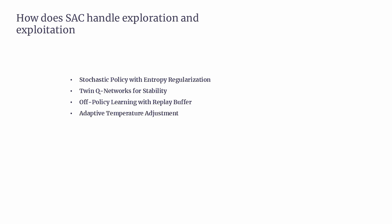The fourth mechanism is Adaptive Temperature Adjustment. The temperature parameter alpha is critical — it determines how much weight is given to the entropy term, directly controlling the trade-off between exploration and exploitation. SAC can adjust alpha dynamically during training, ensuring the agent explores sufficiently early on and exploits effectively as training progresses. This adaptability allows SAC to perform well across a variety of environments. In a testing or evaluation phase, SAC shifts to a deterministic mode by selecting actions based on the mean of the learned action distribution rather than sampling stochastically, ensuring the agent focuses on exploiting the best learned strategies.